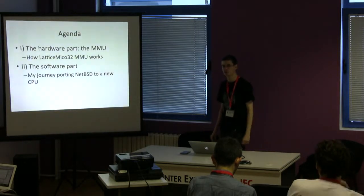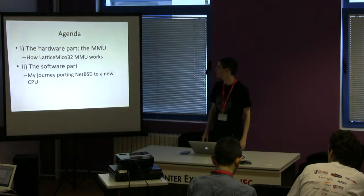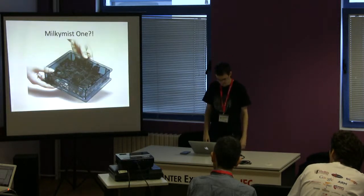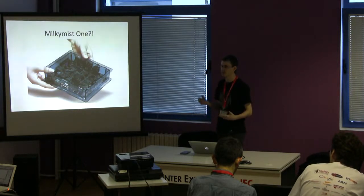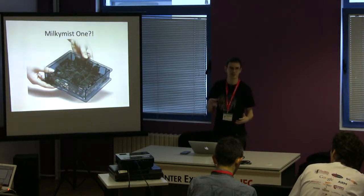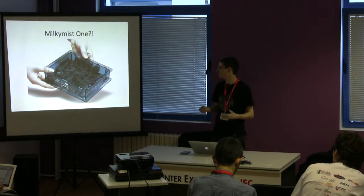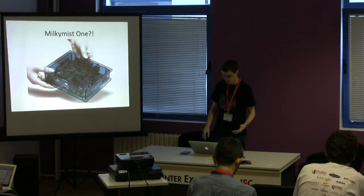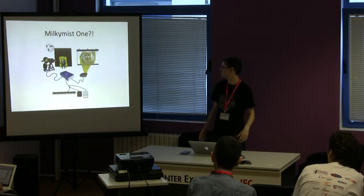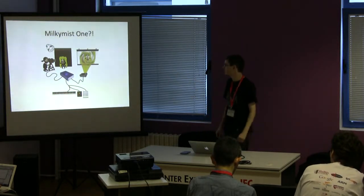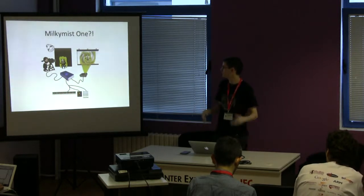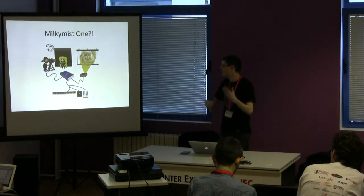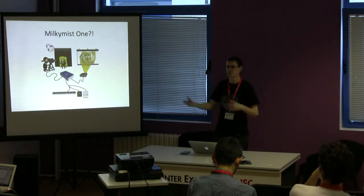First I'll talk about the hardware — the MMU — and then a bit about software. But first, what's the Milky Mist One? It's an electronic device aimed at generating video effects that are synchronized in real time to various sources like audio input, MIDI, or DMX events. It's a kind of artistic device: you can film a performer and project against a wall at a party or concert, applying nice real-time effects like rotation, zoom, or blurring.